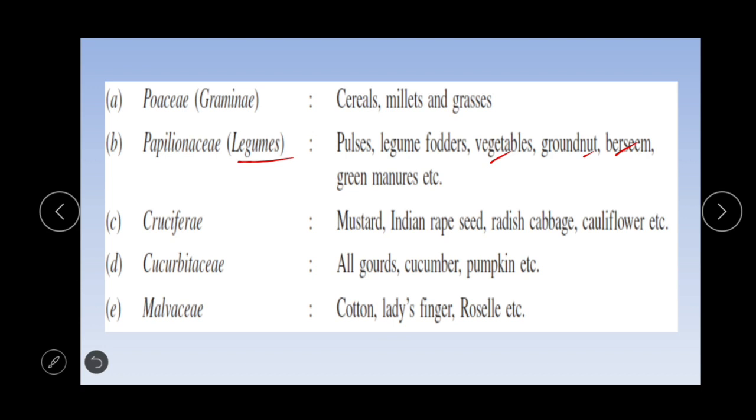Cruciferae family includes mustard, Indian rape seed, radish, cabbage, cauliflower, etc. Cucurbitaceae family contains all gourds, cucumbers, and pumpkin.